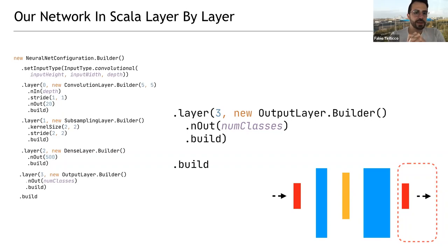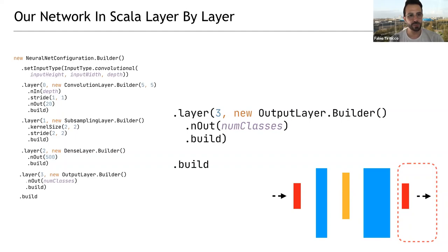Please note that this code on screen is not going to compile — it's highly simplified pseudo-code. There's a lot of other things you need to do. Later there is the link to the GitHub repository where you can find the actual true code. The concepts are all there, and now we have a neural network configuration ready to be trained.